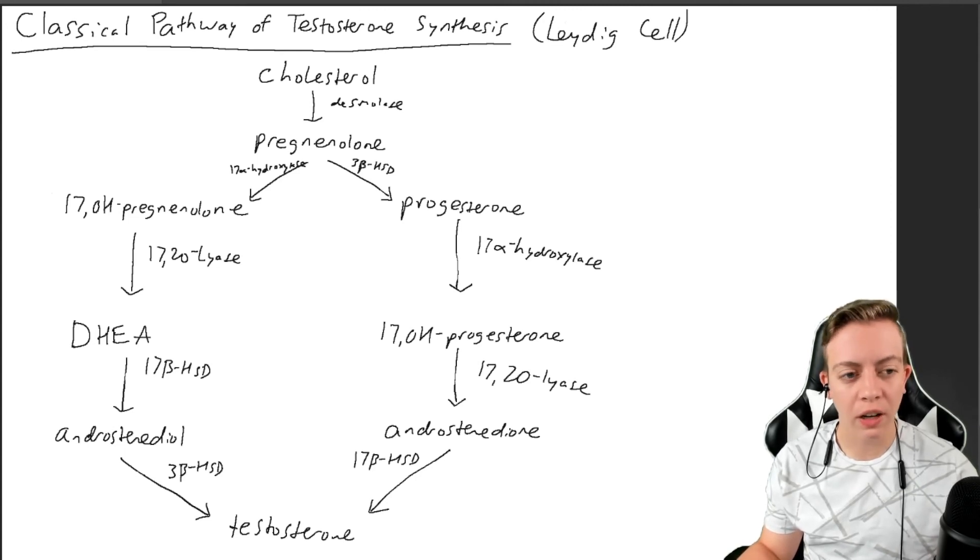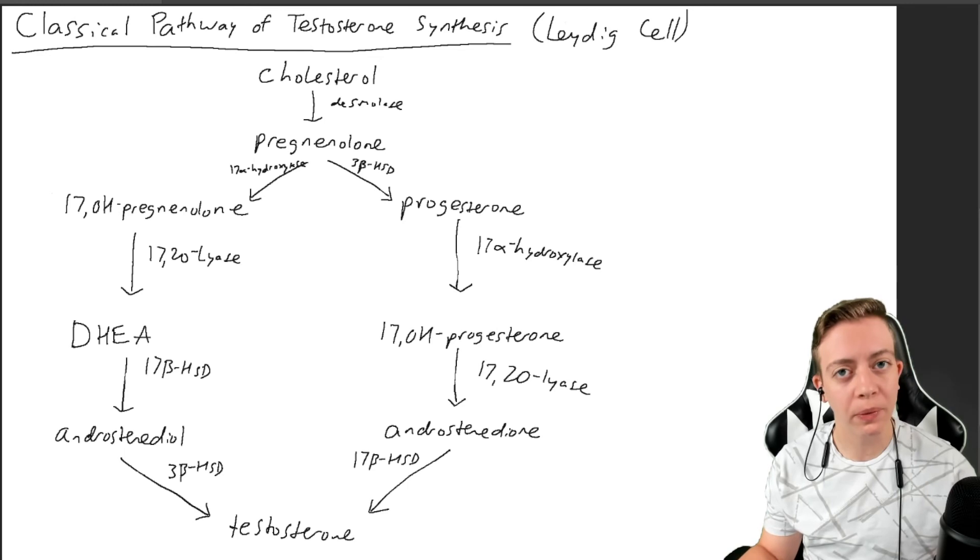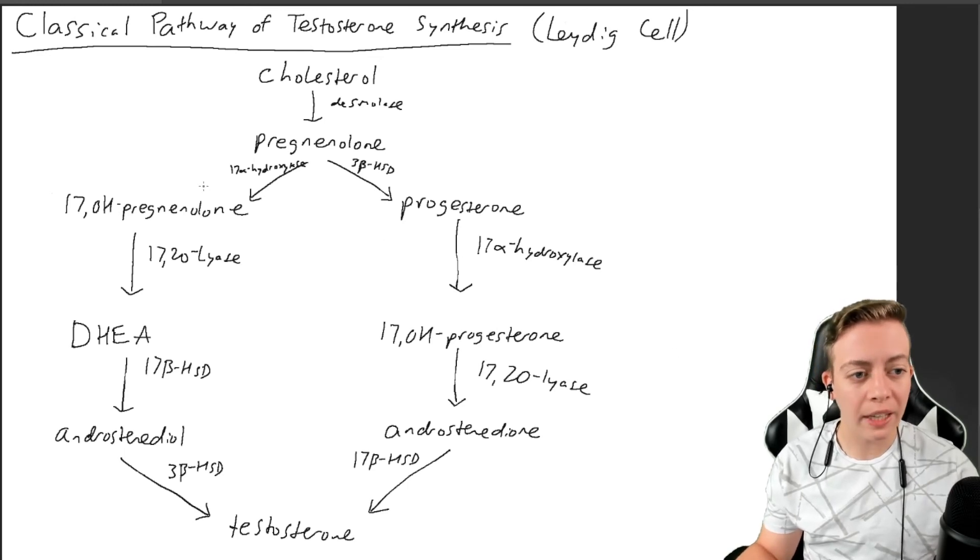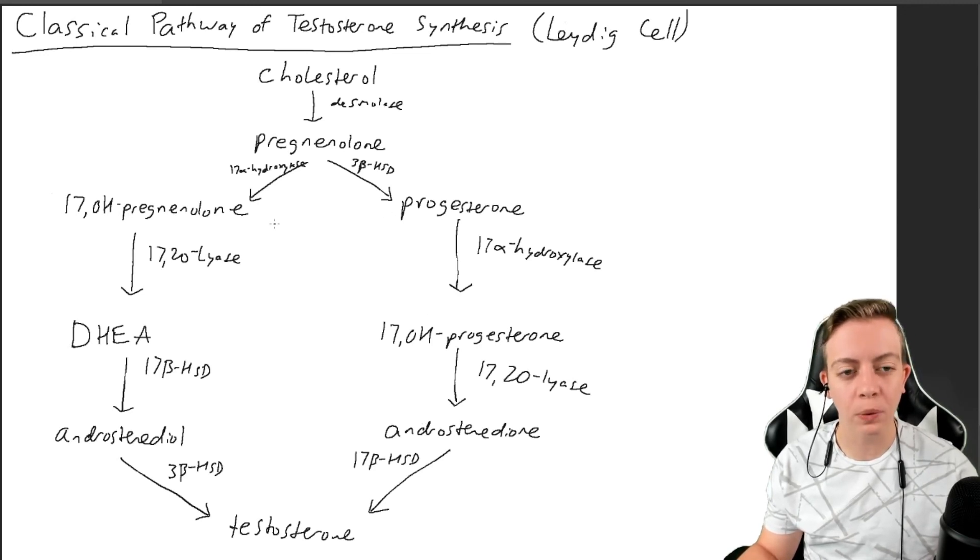And that's kind of where we're going to leave off. There are, of course, if you remember from the adrenal gland, ways to get from 17-hydroxypregnenolone to 17-hydroxyprogesterone using some of these same enzymes, same thing from DHEA to androstenedione, but we're just going to leave it nice and simple today with this diagram.